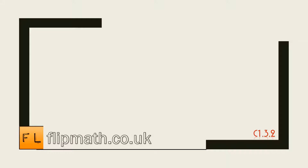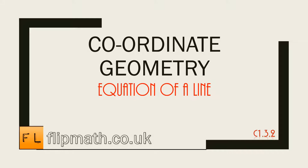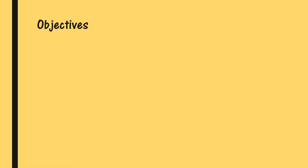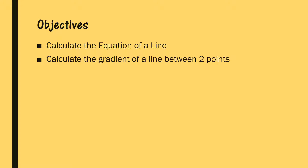Hey everyone, Chris from Flip Math. Today's topic is coordinate geometry, specifically how to find the equation of a line. It's part of the AS Math module for C1 for the C board, or part of my Maths Methods course. The objectives in this lesson are to calculate the equation of a line, calculate the gradient of a line between two points, and then use that to find the equation of a line.